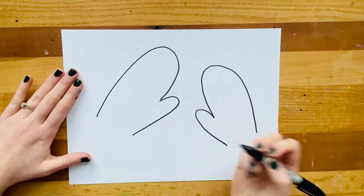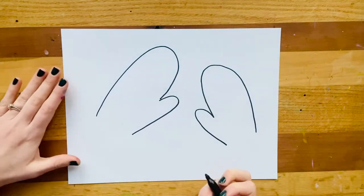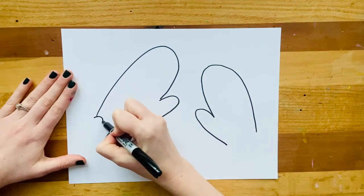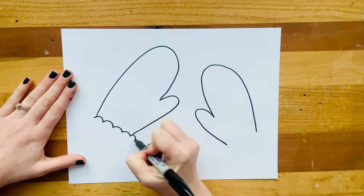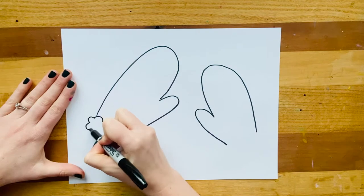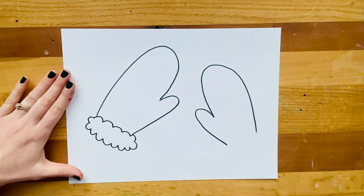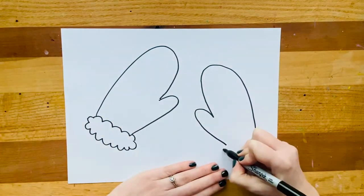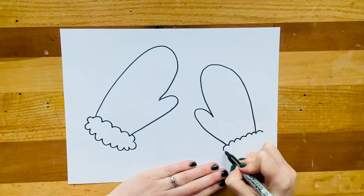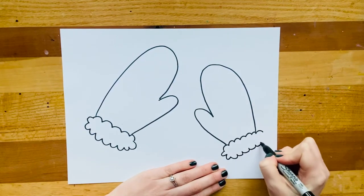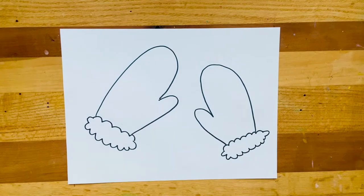Now I like to make mittens that have big furry cuffs on them. And to do that, we're going to start with some bumpy lines at the base of the mitten and then come back around and bump to the other side. So I'm making a big furry end. Again, bump at the end here and bump to the bottom. And we've got big furry ends there.